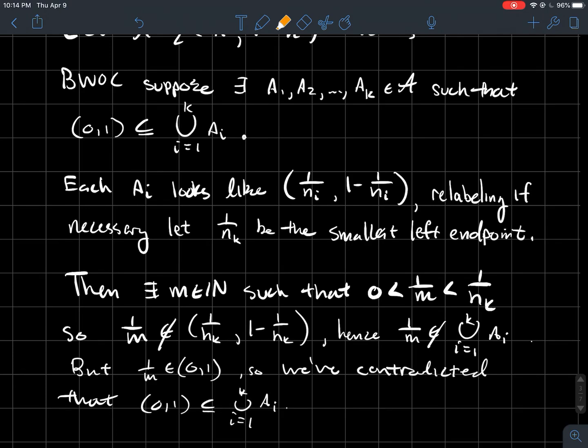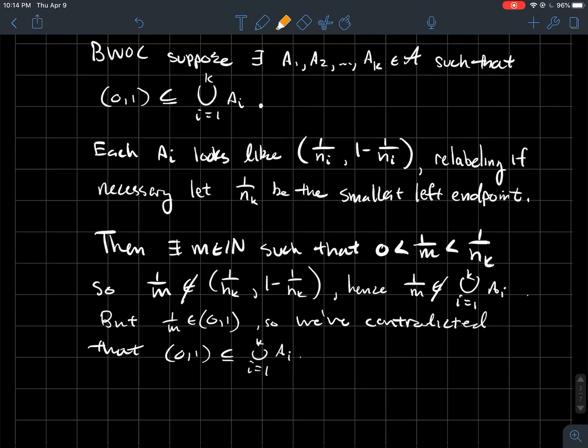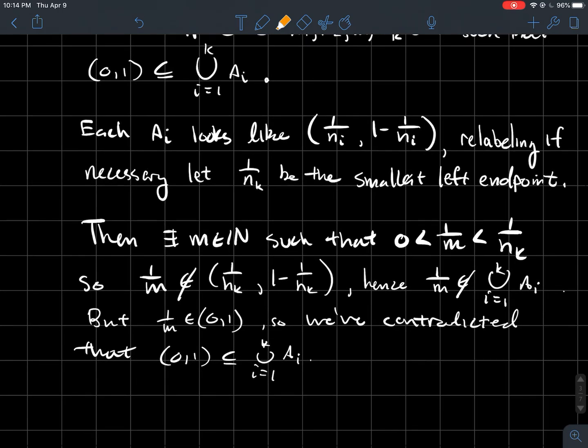Well, we'll draw our picture like we have before. But there exists M that should be even smaller than 1 over n_k. In other words, we could find a natural number so that the reciprocal is even closer to 0 than 1 over n_k is.